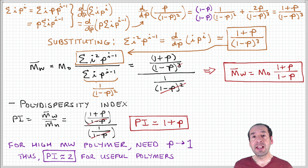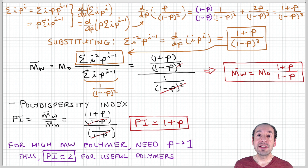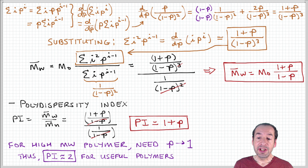This has interesting implications for step growth polymerization. To produce high molecular weight polymers with high degrees of polymerization — the kind we associate with useful materials — we need to go to very high values of the extent of reaction. For example, to get a degree of polymerization of 100, p must be 0.99, meaning a 99% extent of reaction.